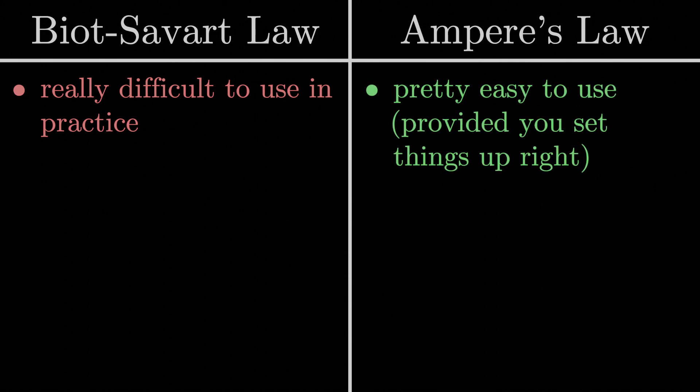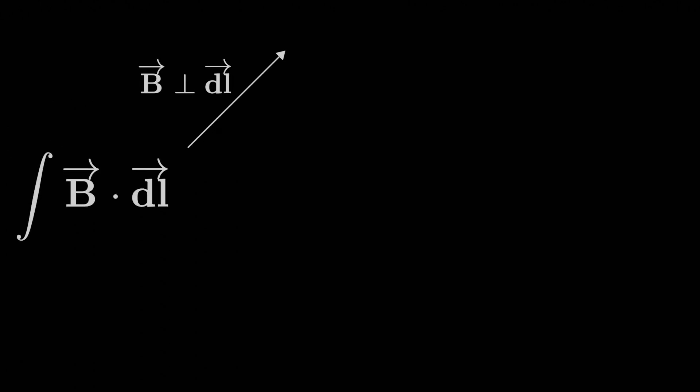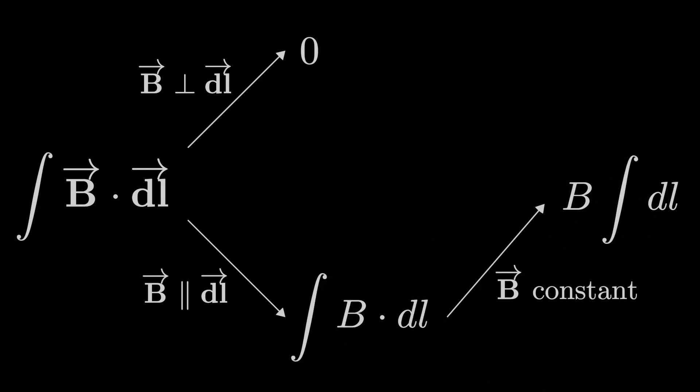Comparatively, Ampere's law is very easy to use, provided you can set things up appropriately. Usually for each segment you're working with, B is either perpendicular to DL, in which case B dot DL is 0, or B is parallel to DL, in which case you can just multiply their magnitudes together. And in that second case, if B is constant, you can just pull B out of the integral altogether, which makes things even easier.